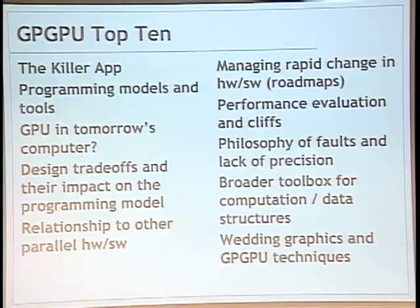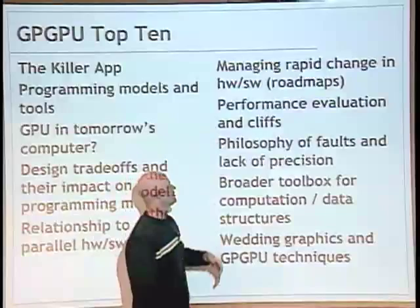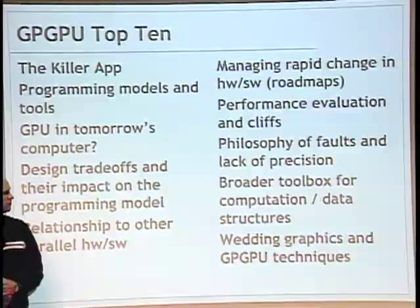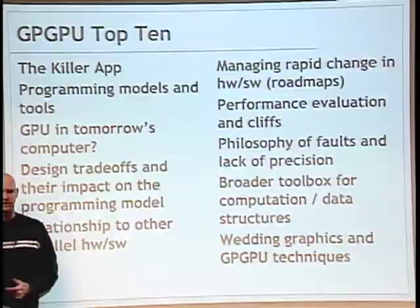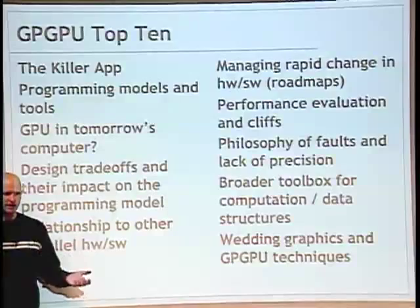Problem six: how do we measure performance? There are starting to be good profilers and autotuners. One major issue with GPUs is performance cliffs — you make a small change and suddenly your performance drops by an order of magnitude. With CPUs that's a more gentle curve, but with GPUs you do the wrong thing and you pay for it enormously. How do we build GPU systems that make those cliffs less severe?